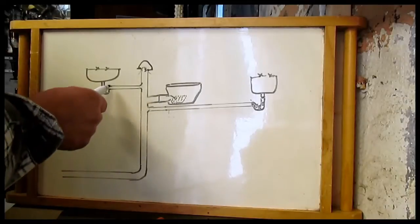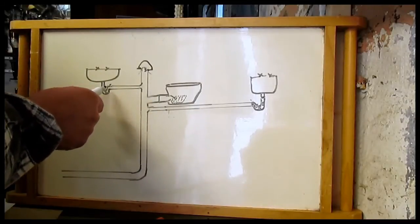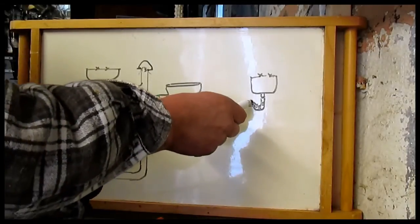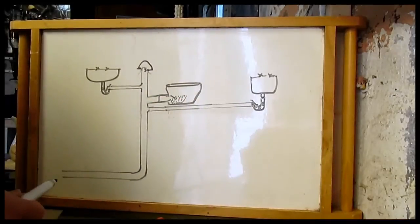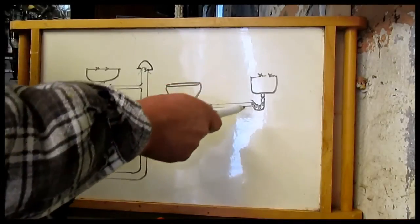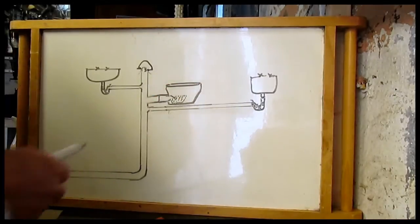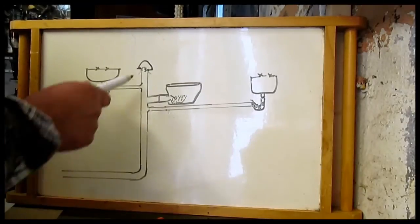You can also get the same things on here. You can get what they call anti-vac traps on your bath and your basin if you're having trouble. And that again lets air in when there's a buildup here in the vacuum. So that's what a durgo valve is.